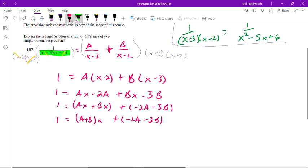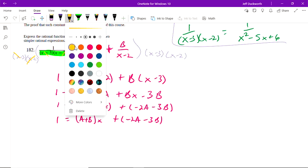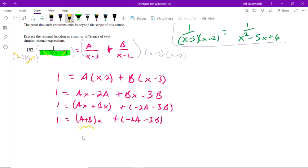What this means is, this A plus B must equal 0. And the reason is, we have no X value on the left-hand side. So A plus B must equal 0. And we also must have that this must equal 1.